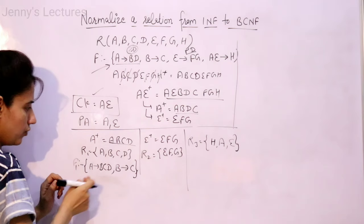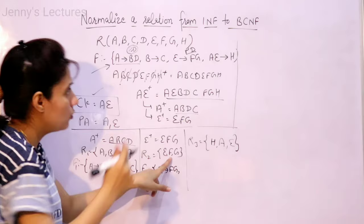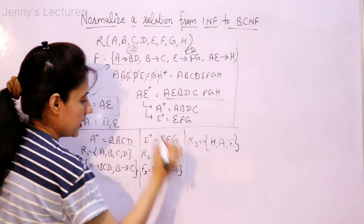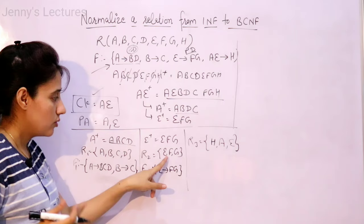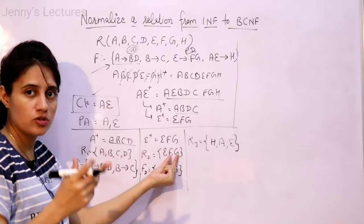For R2(E,F,G), the functional dependency: E closure gives F and G. F closure gives nothing non-trivial. G closure gives nothing. E can drive all attributes, so no need to check E,F or E,G combinations — those would be duplicates. F,G closure would be only F,G — trivial. So there is only one functional dependency for R2: E→FG.